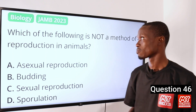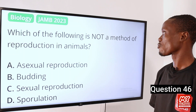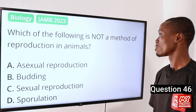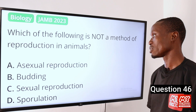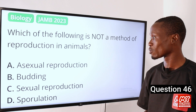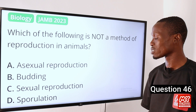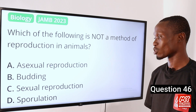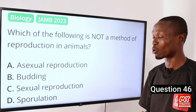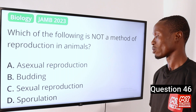Question 46. Which of the following is not a method of reproduction in animals? A. Asexual reproduction. B. Budding. C. Sexual reproduction. D. Sporulation.